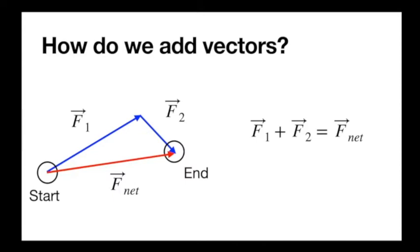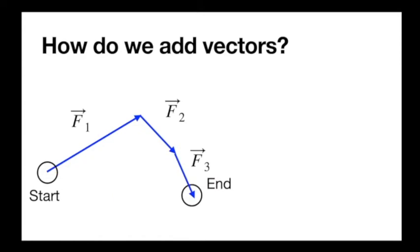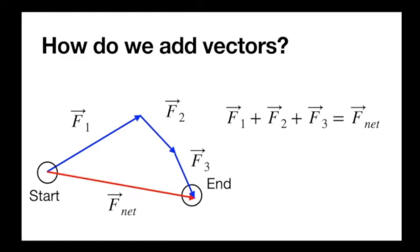f1 plus f2 is f net, and drawing them out gives a helpful way to find the sum. This rule — adding them tip to tail — applies to as many vectors as we have. Just like normal addition, if you want to add f3, just put f3 on the end, and f net is the new vector from overall start to overall end. The order does not matter. If I had 60 different vectors, there are millions of permutations, but the net will be the same no matter what. Just like 3 plus 4 equals 4 plus 3 — it commutes.